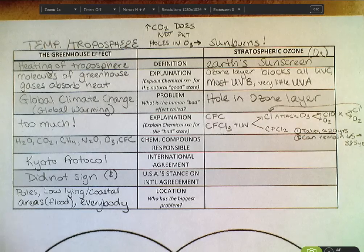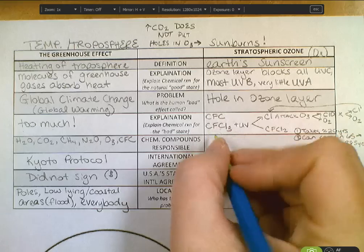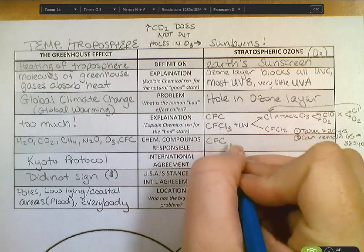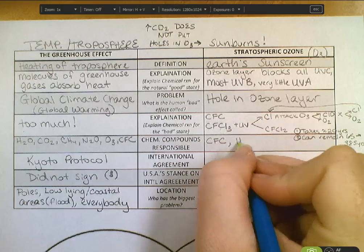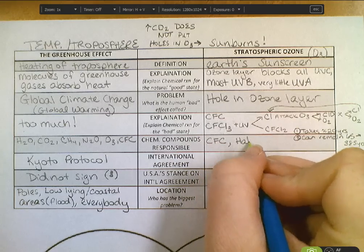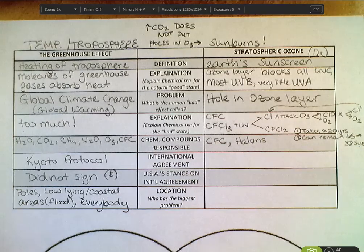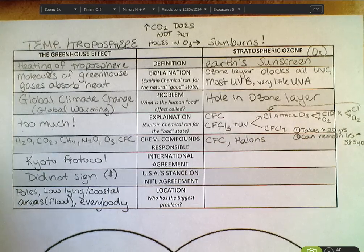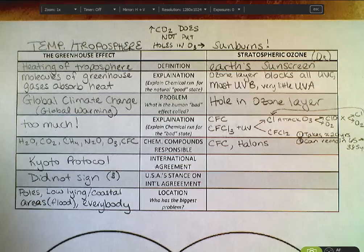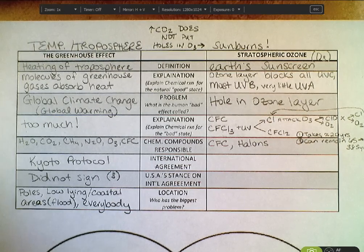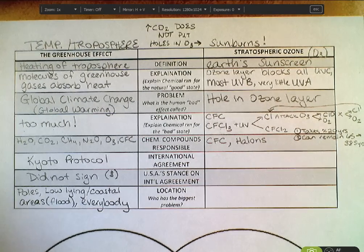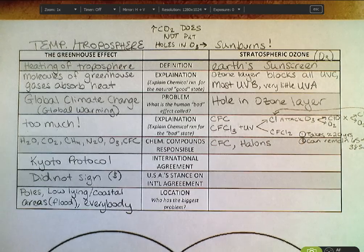So once they're there, they keep doing this process again and again for anywhere from 65 to 385 years. The chemical compounds responsible are CFCs and halons. Being able to list CFCs and halons on an FRQ would be invaluable.